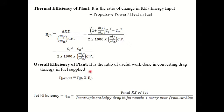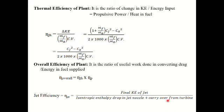Overall efficiency of the plant is the ratio of useful work done in converting drag per unit energy in the fuel supply. Overall efficiency equals thermal efficiency times propulsive efficiency. Jet efficiency is defined as the actual kinetic energy of the jet divided by the isentropic enthalpy drop in the nozzle plus carryover from the turbine.